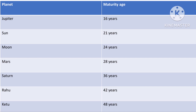What exactly does this mean? If you think logically, you know that the planets have been in the universe for hundreds of thousands of years. So this maturity age is not referring to when a planet matures — it is referring to the age at which you attain the maturity to deal with the real essence of that planet and its effects.